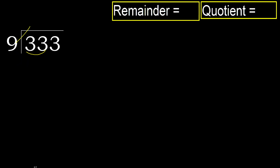9 multiplied by which number is nearest to 33 but not greater? 9 multiplied by 4 is 36, which is greater. Multiplied by 3 is 27, which is not greater, ok. 33 minus 27 is 6.